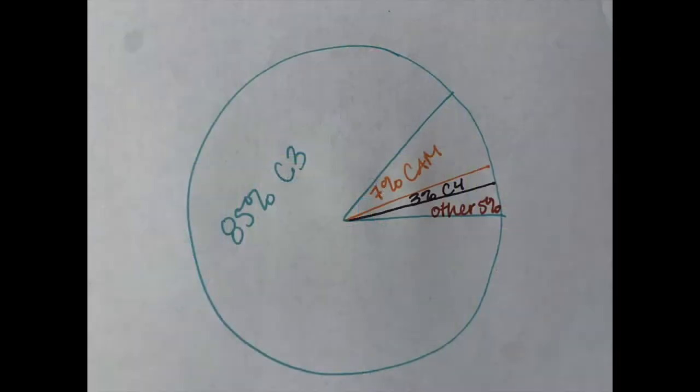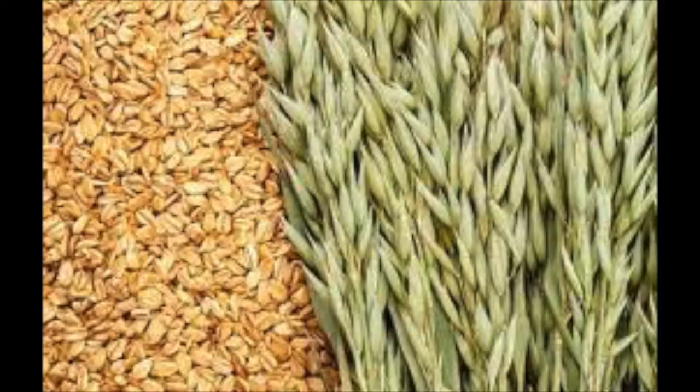Around 85% of plants complete C3 photosynthesis. Examples of these plants include rice, wheat, soybeans, oats, and all trees.